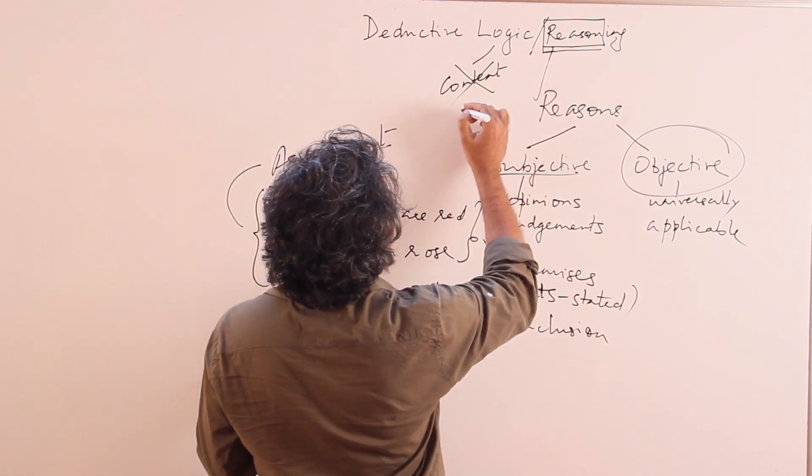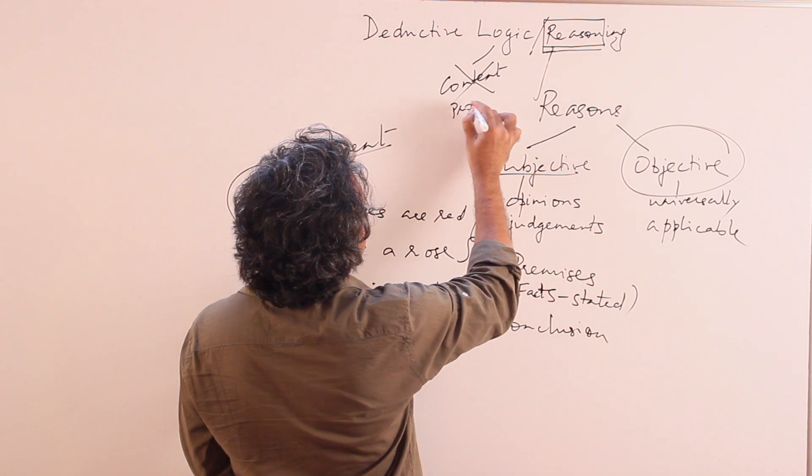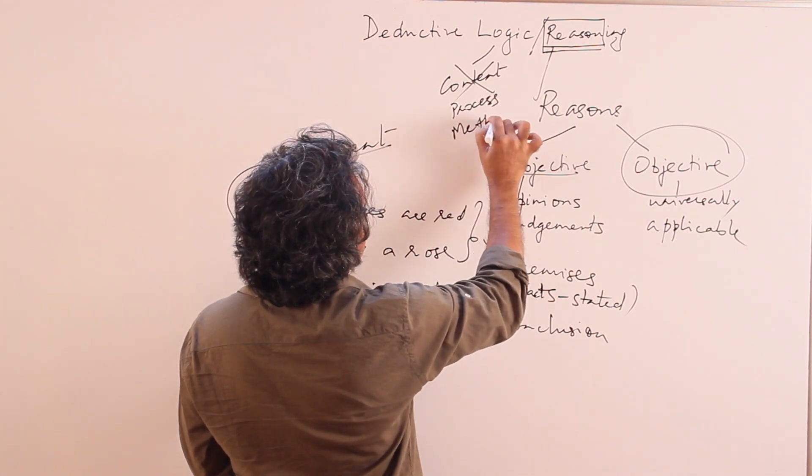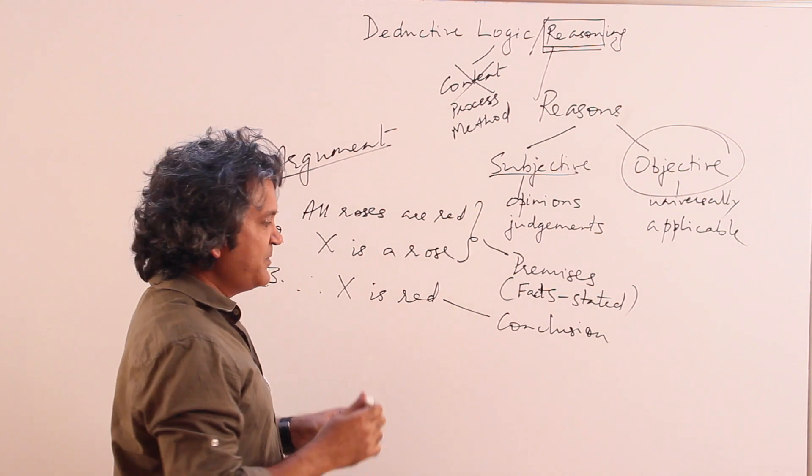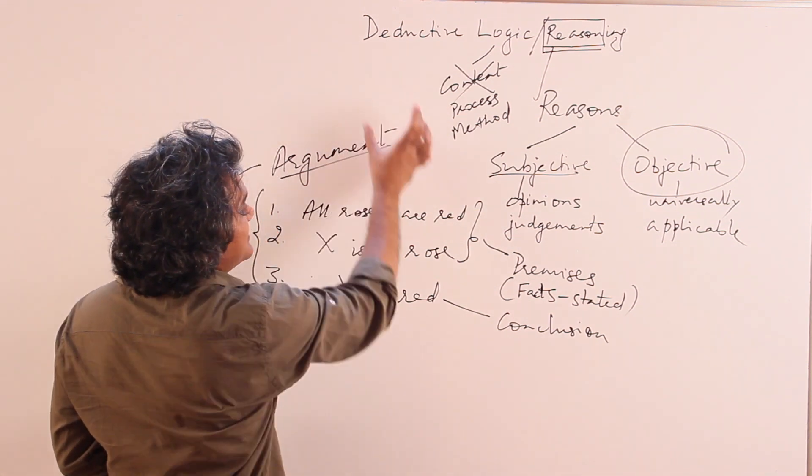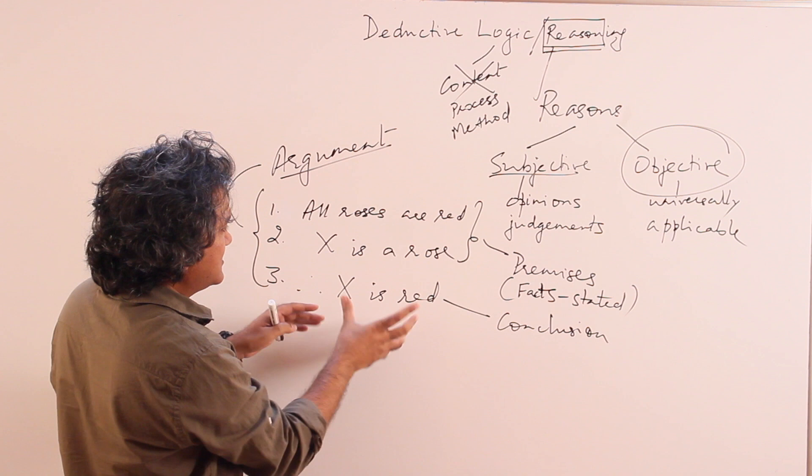Logic is interested in the process. So it is interested in the method. And deductive is one type of a method.